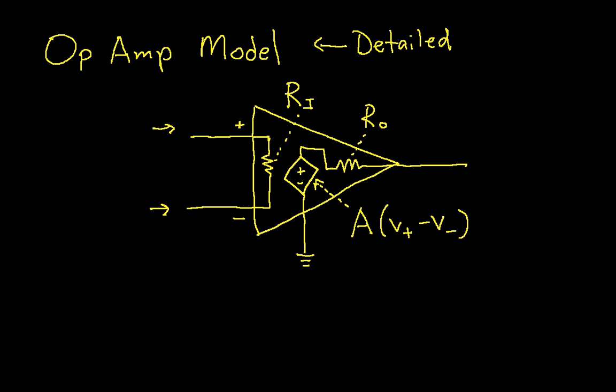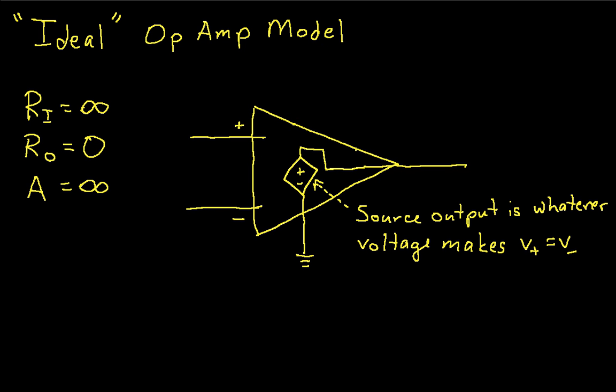Now again, as I said, in real life, in many applications, we don't have to worry about this detailed of a model. We can use what we call the ideal op-amp model. And the idea behind the ideal op-amp model is the input resistance is infinite, so it's like the two inputs just go to terminals inside the op-amp, and the output resistance is zero, so there's no output resistance, and the gain is infinite.